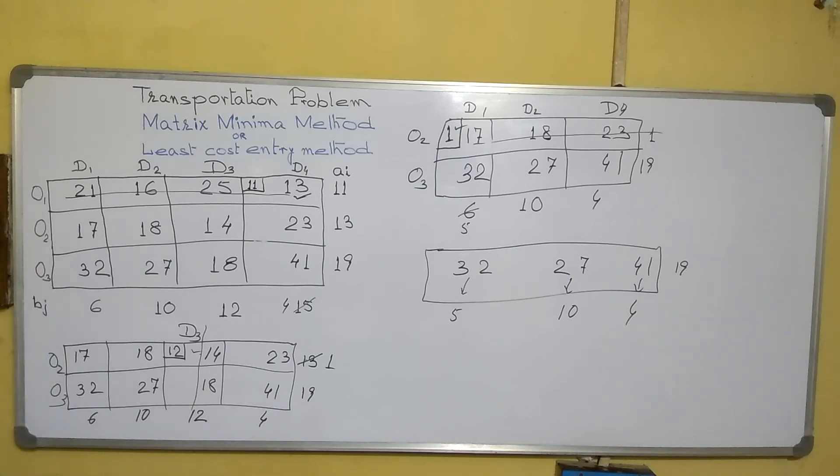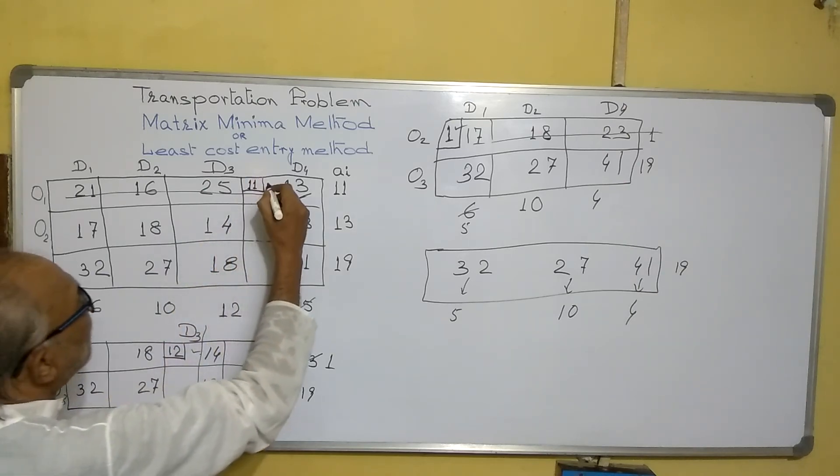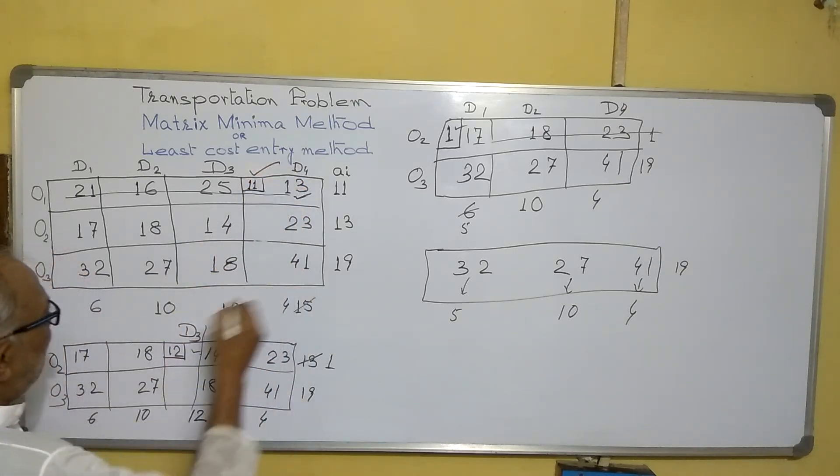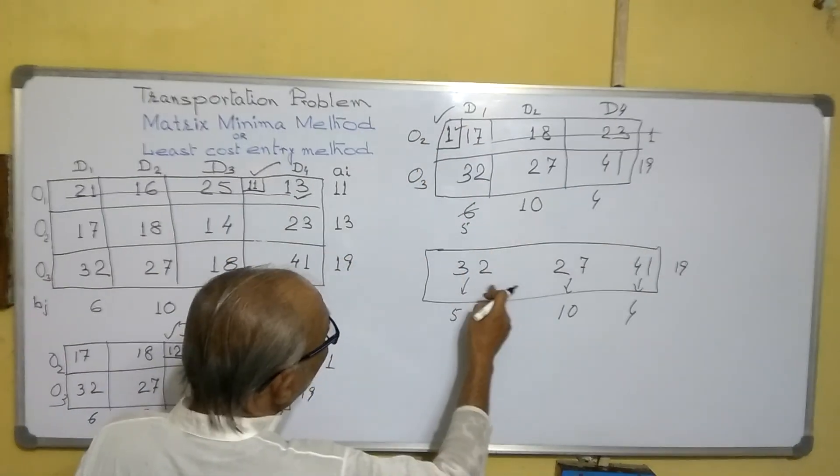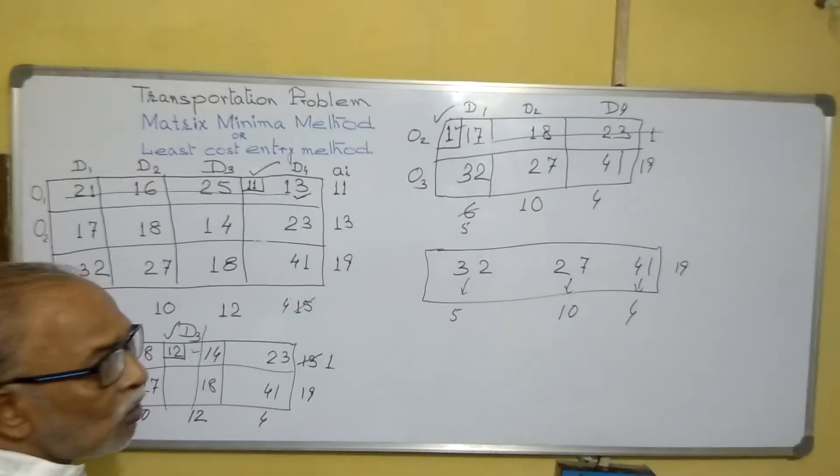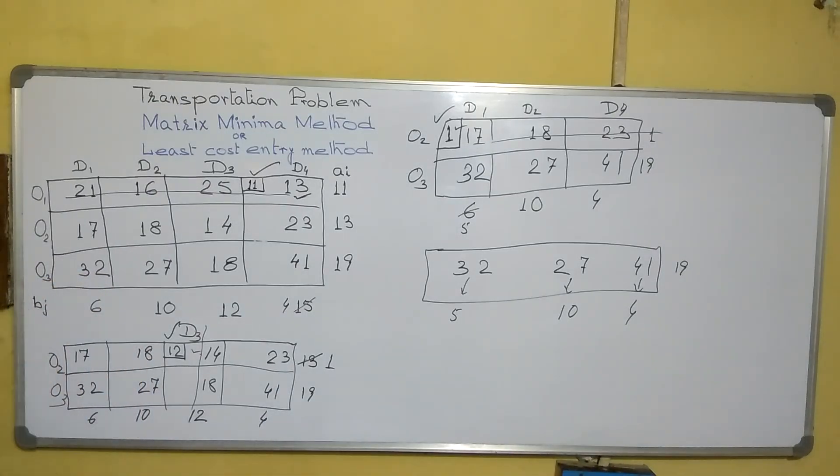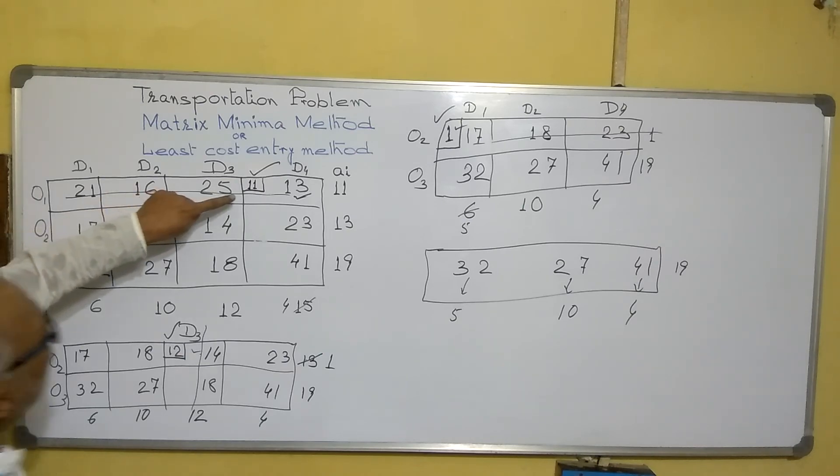So what is our supply and solution? First we supplied this one, 11. Next this one, then all the three. So our total cost becomes, we can calculate the cost. Here we supplied 11, so total cost equals 11 into 13 per unit.